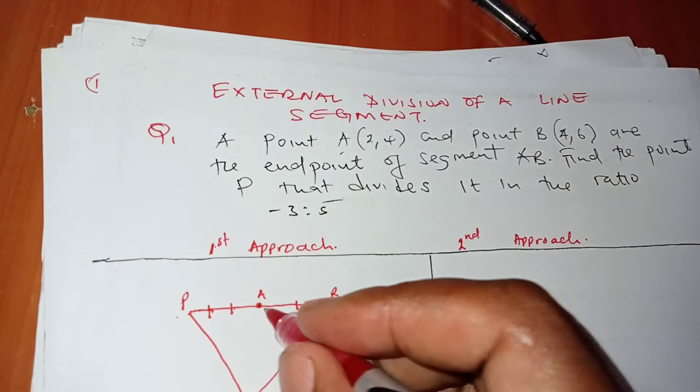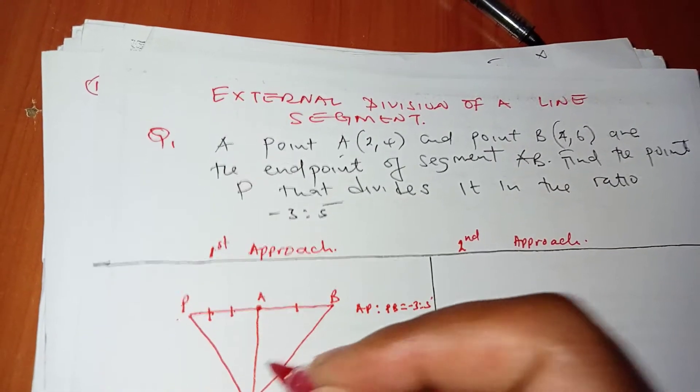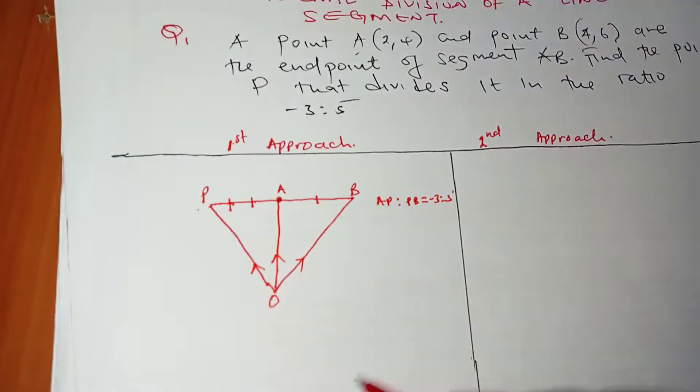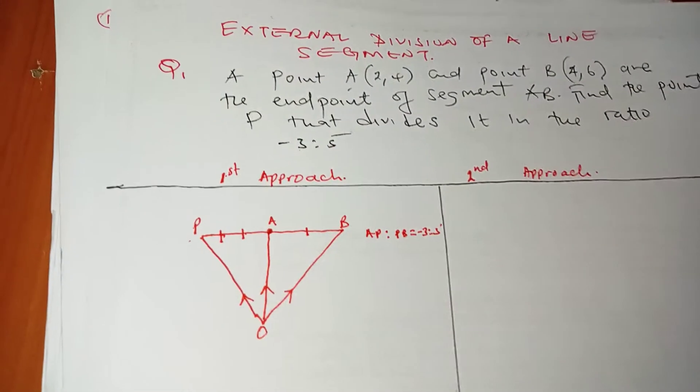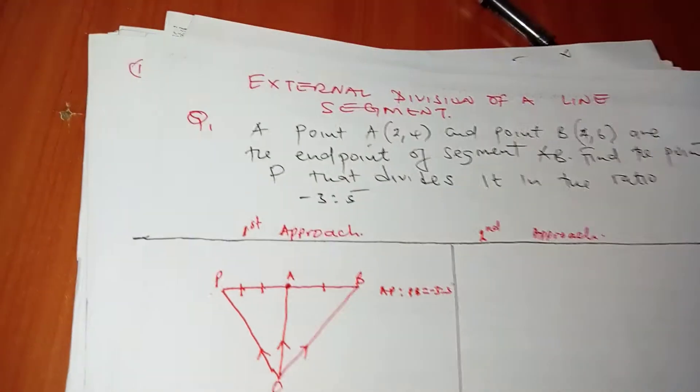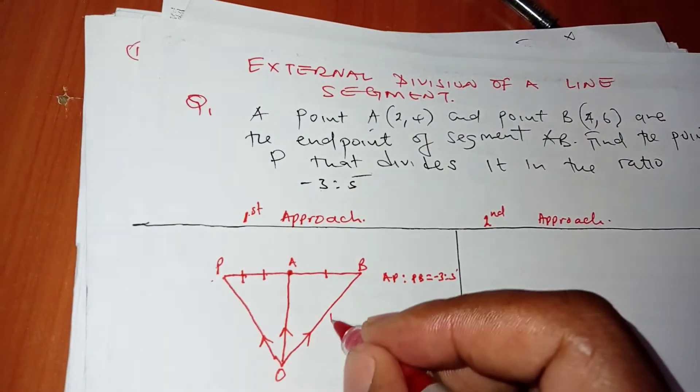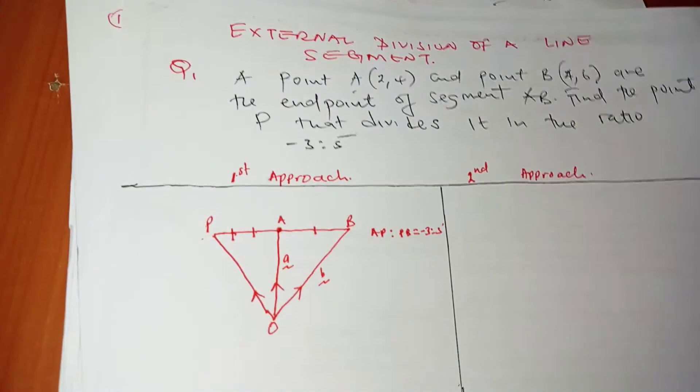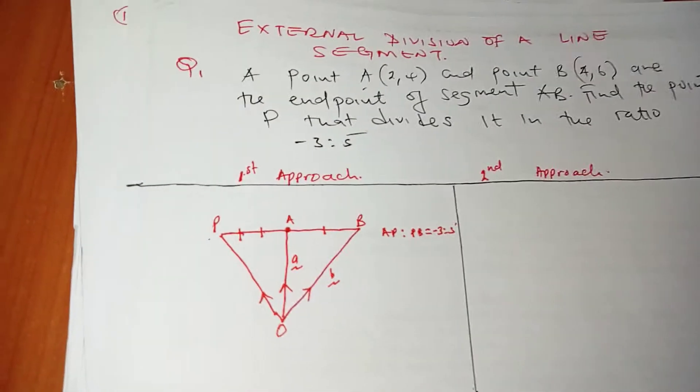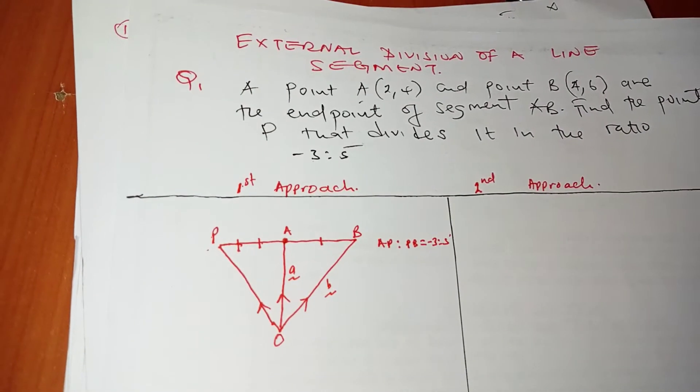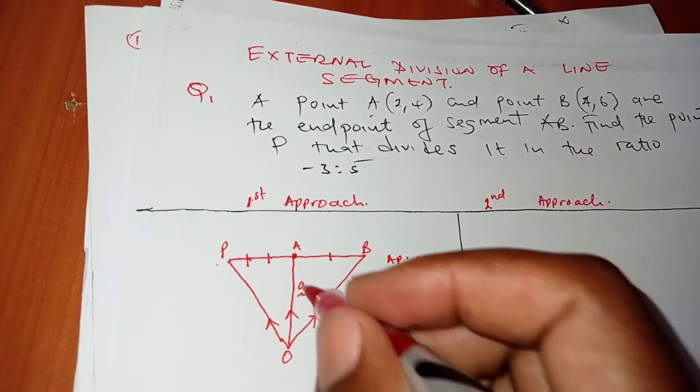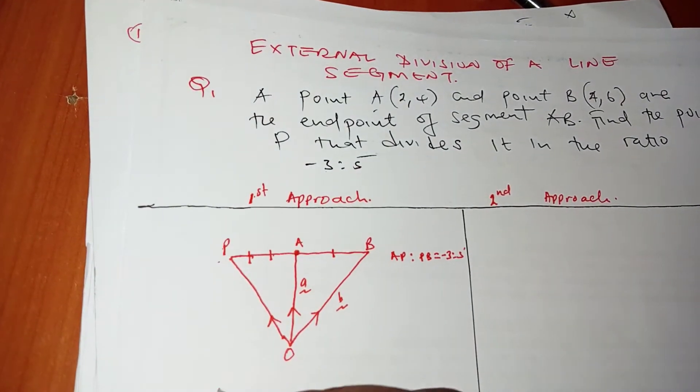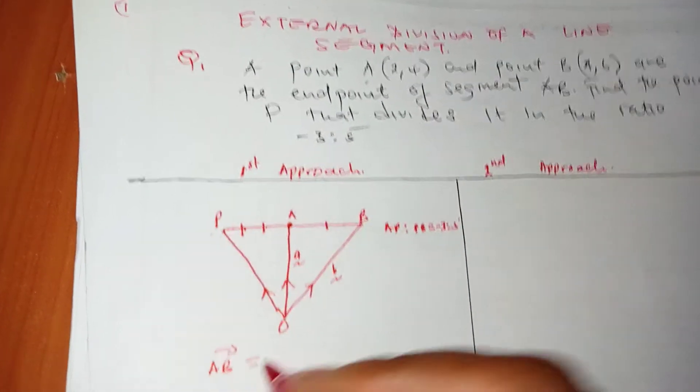I've drawn this because I want to take this one as my origin, and then use my vectors here to actually determine the coordinates of P. I'll call this one my little B vector, and this one my little A vector. My motivation is to express OP in terms of little A and little B.